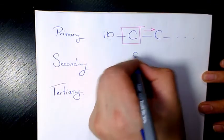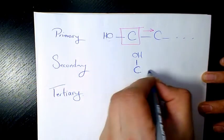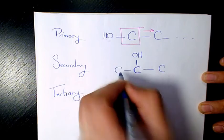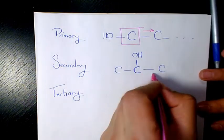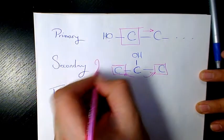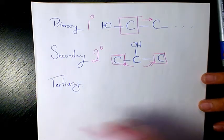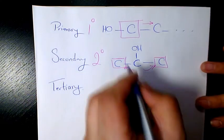In secondary alcohol, the hydroxy group connects to a carbon, and this carbon connects to two other carbons. Since we have two carbons, we call it secondary alcohol. For example, in this case, we have 2-propanol.